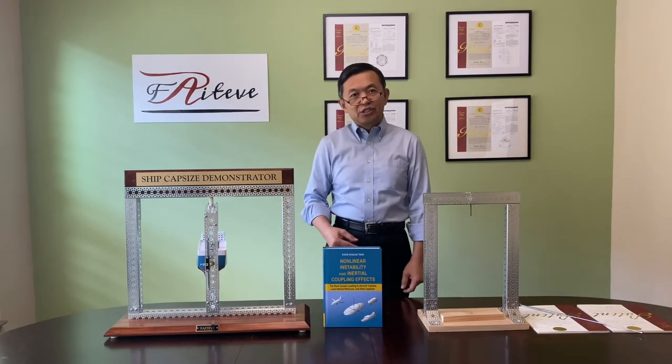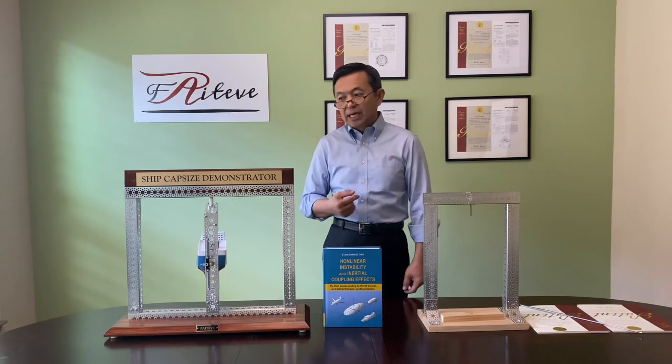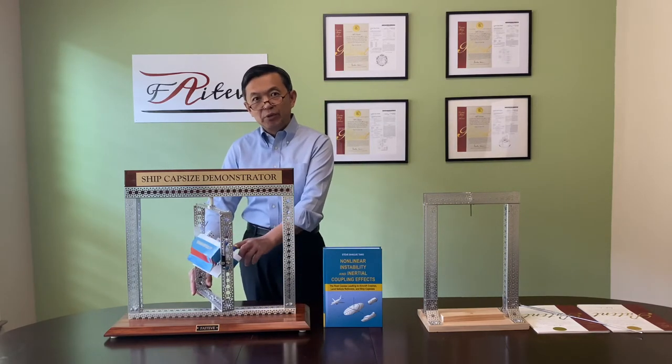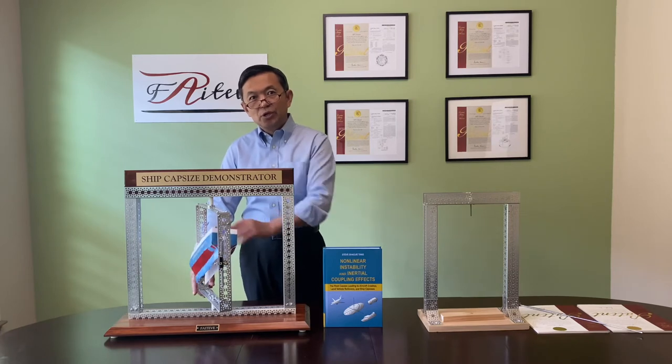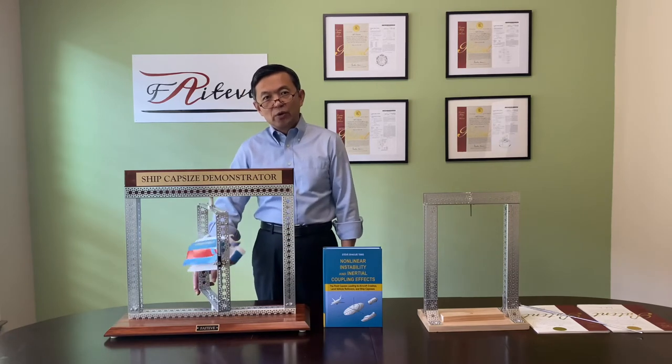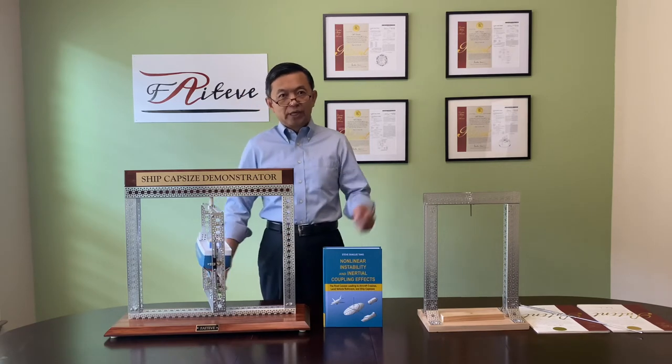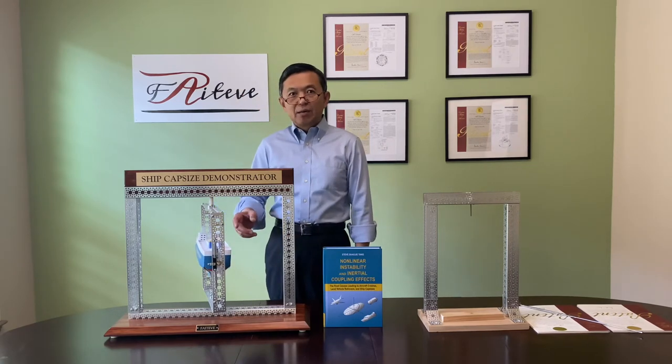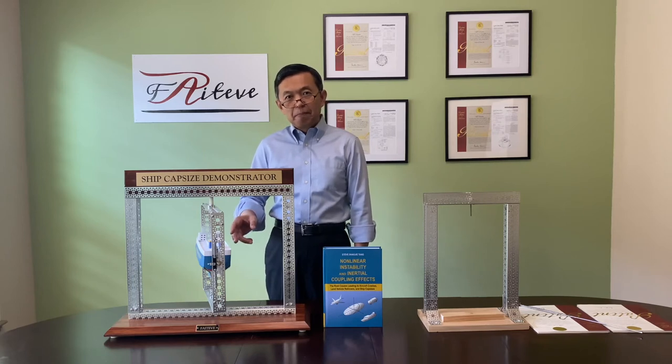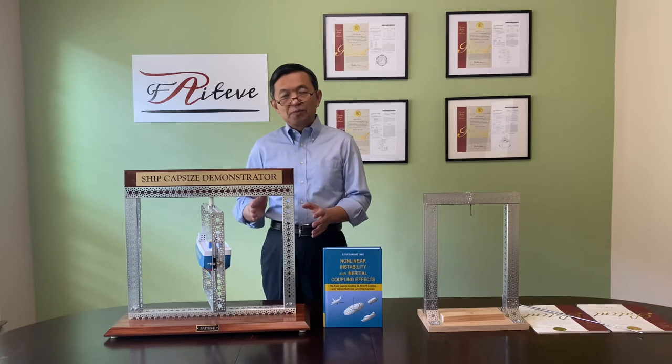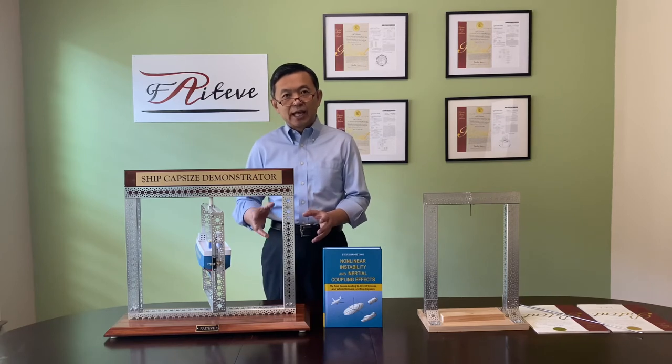To better understand that phenomenon I made this device, it is a ship model. It has three degrees of freedom in roll, pitch, and yaw, with restoring and damping in roll and pitch, just like Golden Ray. It rotates above its center of gravity. More importantly, its yaw moment of inertia is the intermediate one, just like Golden Ray.